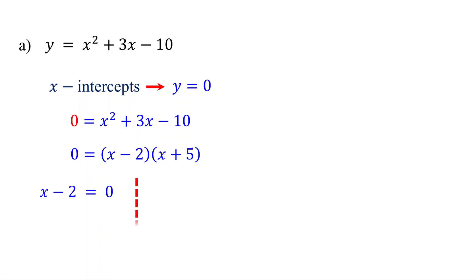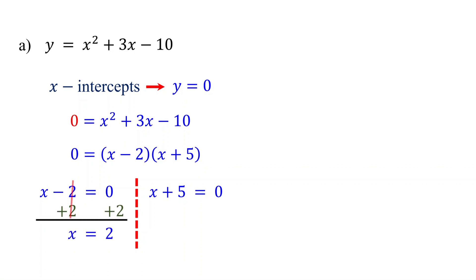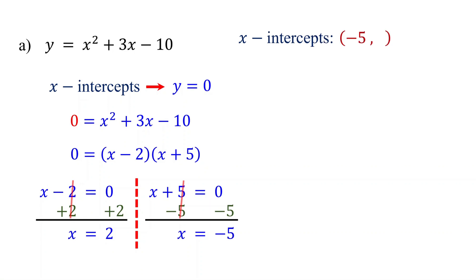Next, set each factor equal to 0 and solve for x. Solving the first equation, we find that x equals 2. Solving the second equation, we find that x equals negative 5. Therefore, the x-intercepts of the parabola are the points (negative 5, 0) and (2, 0).